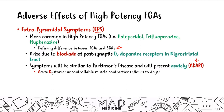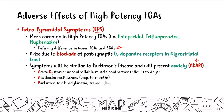The first EPS symptom in ADAPT is acute dystonia — uncontrollable muscle contractions — presenting within hours to days of starting a high-potency first-gen antipsychotic. The second is akathisia, or restlessness, where the patient has an urge to get up and walk around, lasting days to months. Parkinsonism is also seen, with bradykinesia and hand tremor, also lasting days to months.